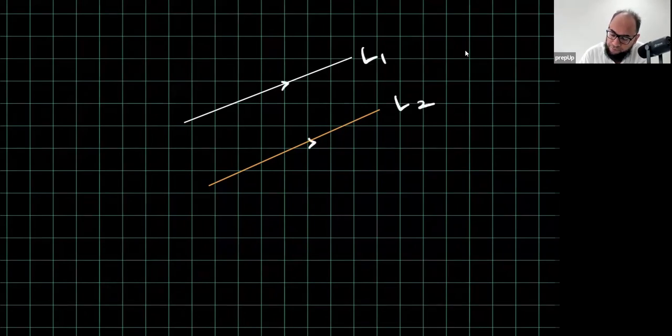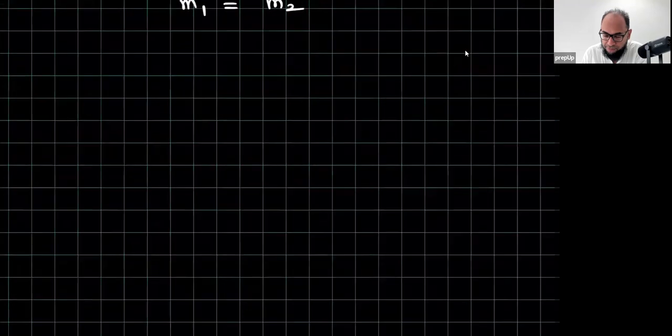This is line 1, this is line 2. If I talk about the gradient, m is the symbol that I'm using, m1 equals to m2. Now, let's first use this knowledge and let me create a question for you.